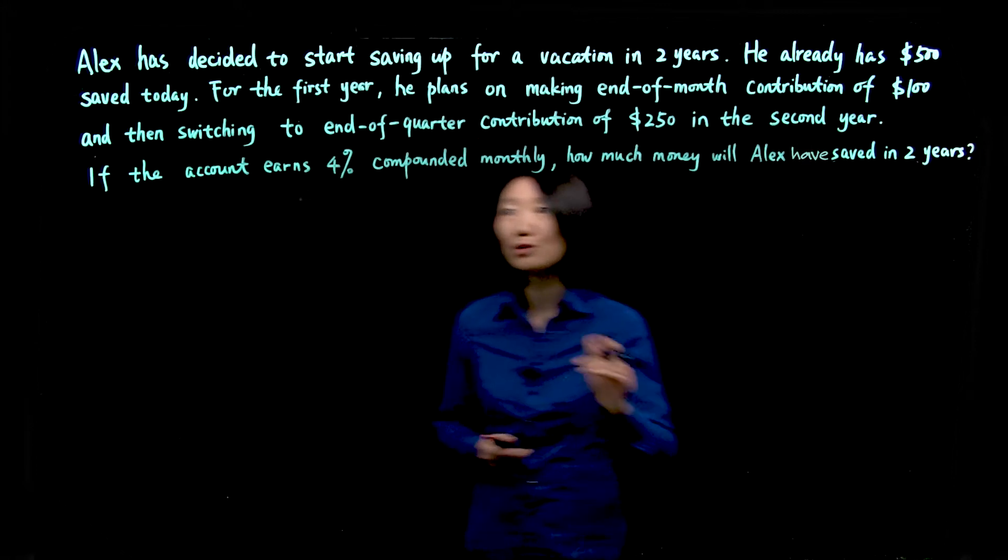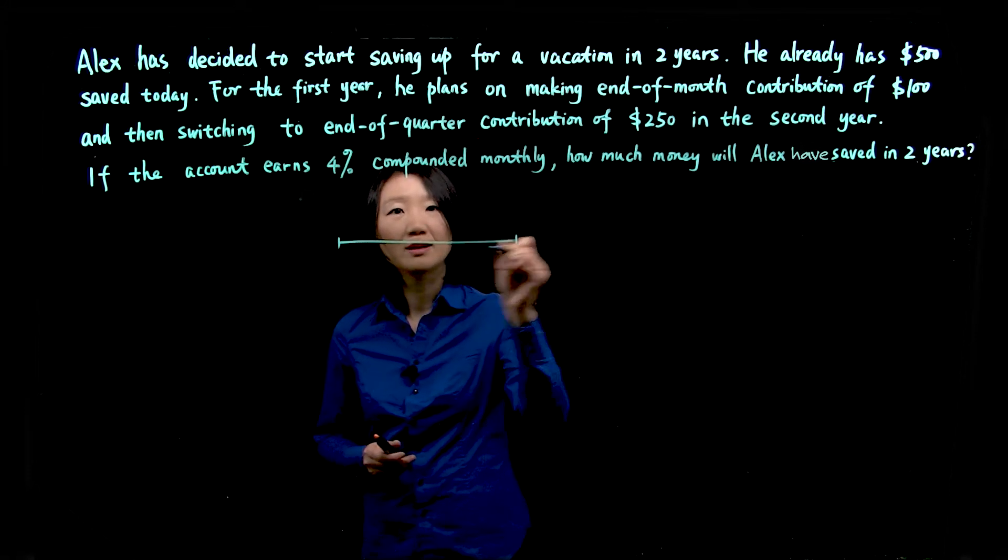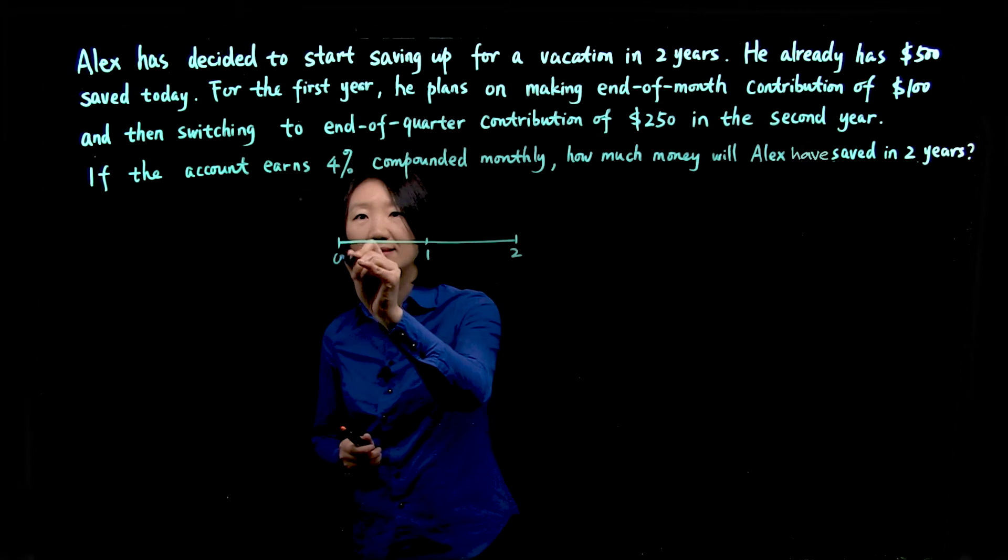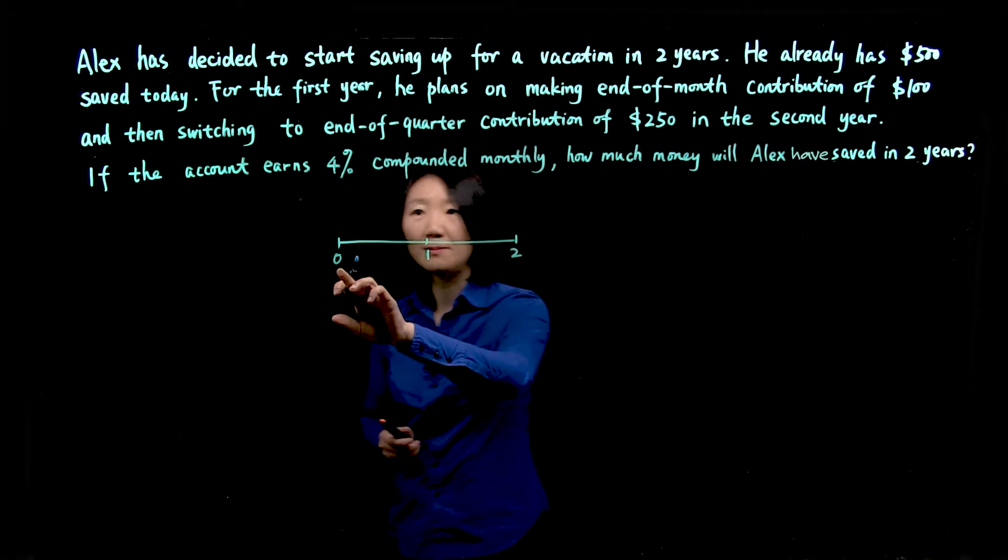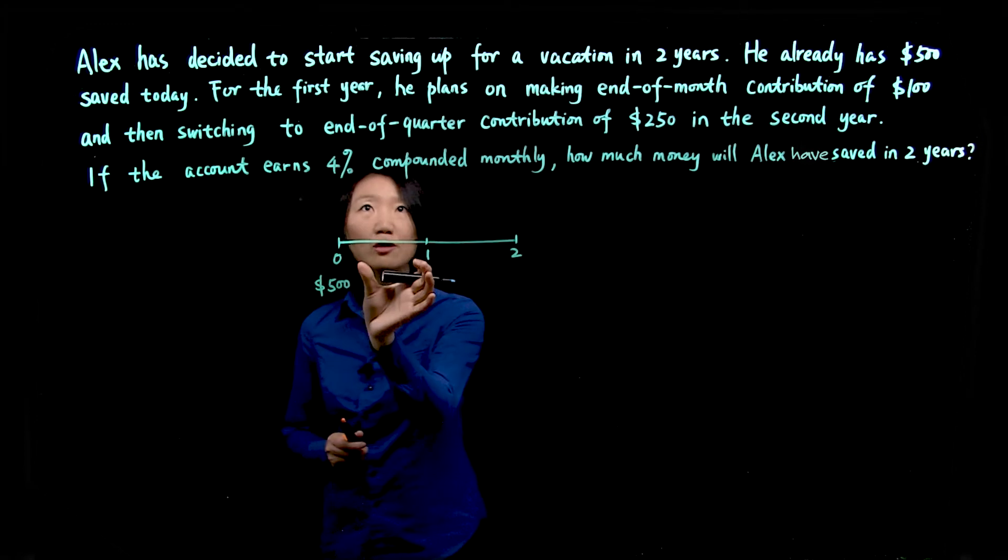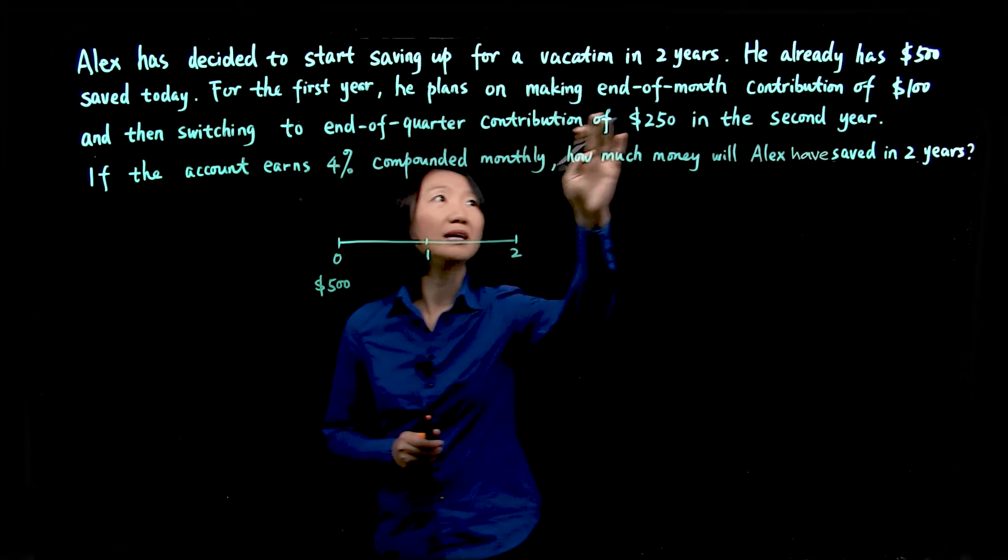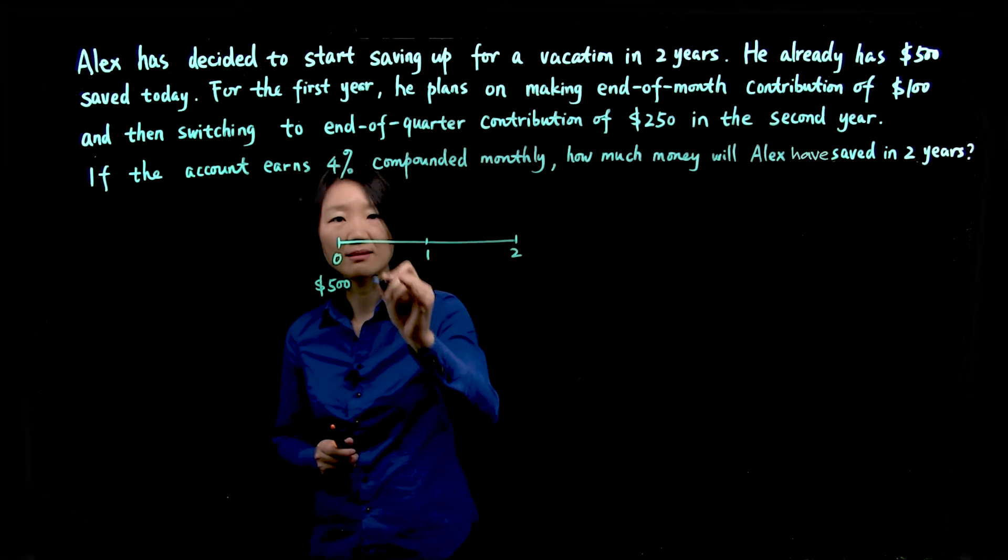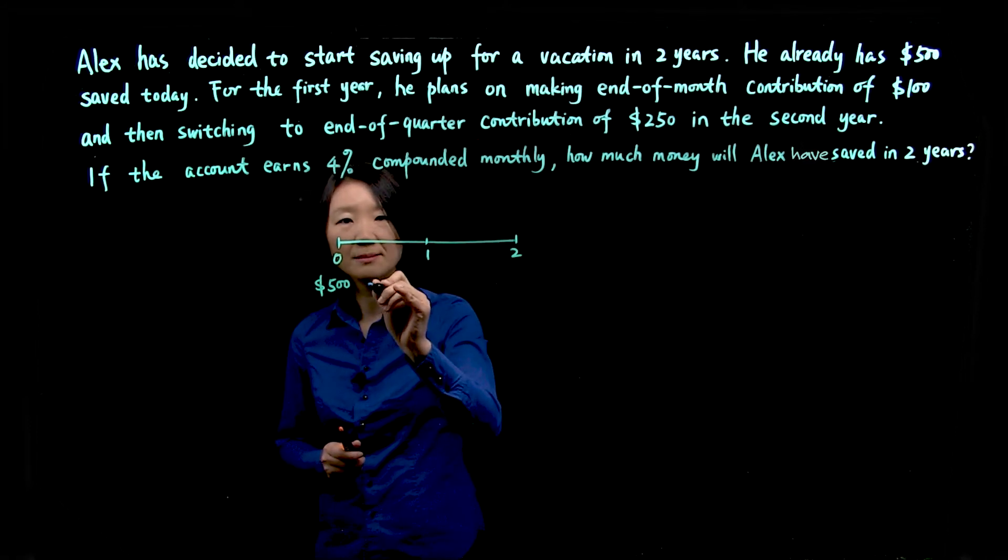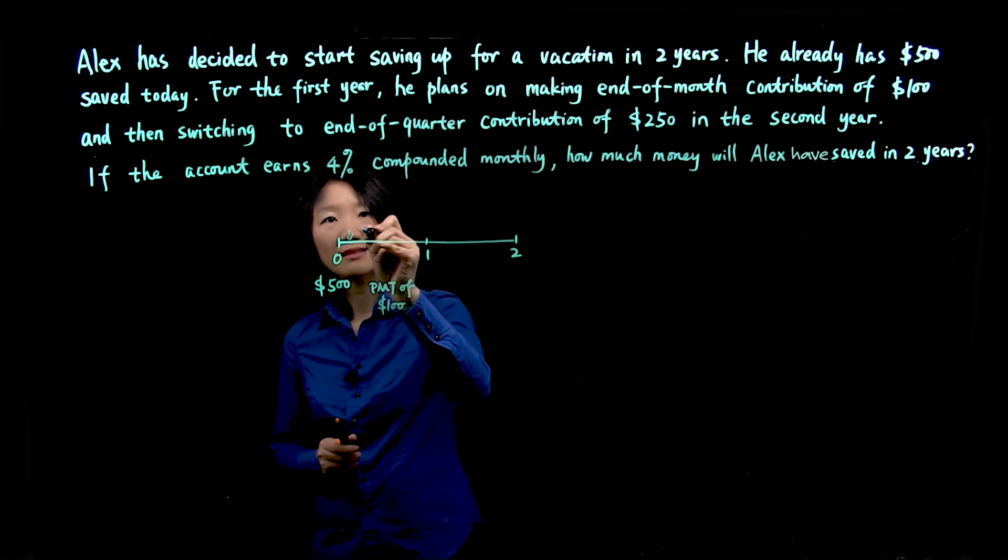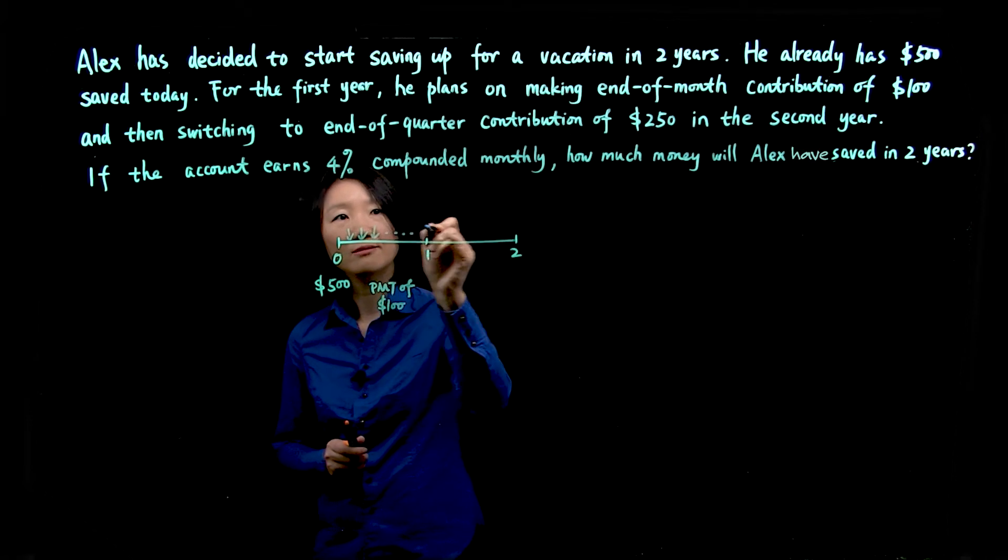So first, let's draw a timeline. We're looking at a two-year time period. Beginning, that's right now, Alex already has $500 saved up. And for the first year, he will make end of month contributions of $100 every month. So for the first year, he will make PMT of $100.